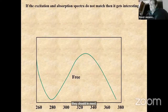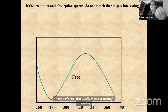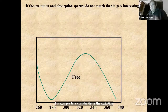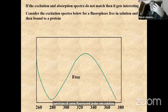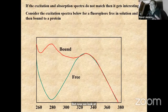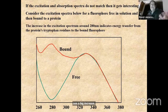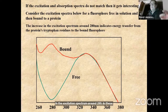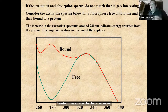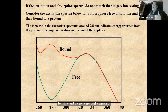If the excitation and absorption spectra don't match, that usually means something interesting is happening. For example, consider a fluorescent probe in solution that can bind to a protein. We might see a big increase in the excitation spectrum around 280 nm, which indicates energy transfer from the protein's tryptophan residues to the bound fluorophore. This is a brief example of how the excitation spectrum can give you information about what's going on in your system.